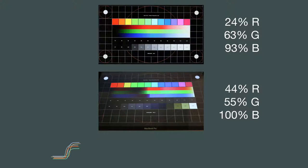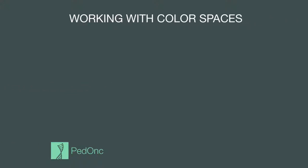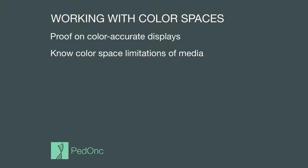Color accuracy and viewing angle variations differ from one display to the next. You can try this phenomenon yourself by looking at the same colors from different angles by tilting your monitor or moving your head — some colors will shift more than others. To work around limitations in color accuracy, it's important to validate RGB colors on color-accurate displays, know the color space limitations of your media, and keep in mind that colors on monitors often appear different than on printed media.